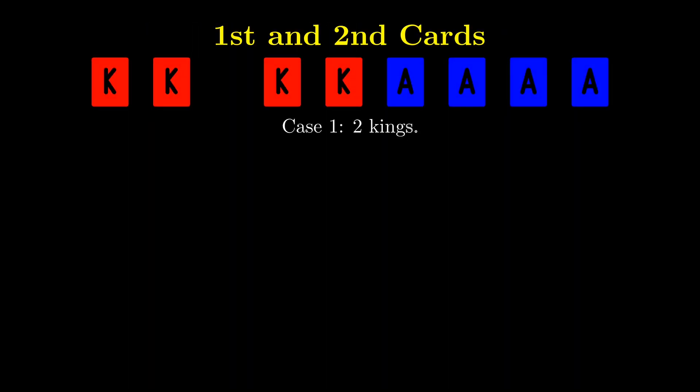Let us consider the first and second cards. Case 1, we have 2 kings, and the 6 remaining cards are 4 aces and 2 kings. The total number of arrangements is 6 factorial divided by 4 factorial times 2 factorial, which gives us 15.